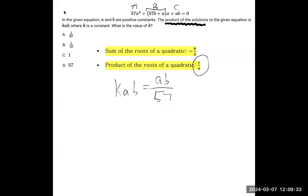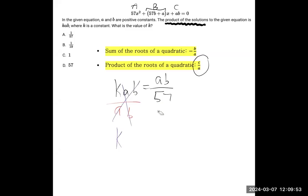So now we have to just simplify this. If we divide by a·b on both sides, dividing by a·b on the left leaves you just with k. Dividing on the right — there's a better way to write this. Dividing by something is the same as multiplying by one over that thing. So instead of dividing by a·b, let's multiply by one over a·b. That illustrates that the a·b's cancel, leaving you with one on the top and 57 on the bottom. And that's what k is equal to. So the answer is a.